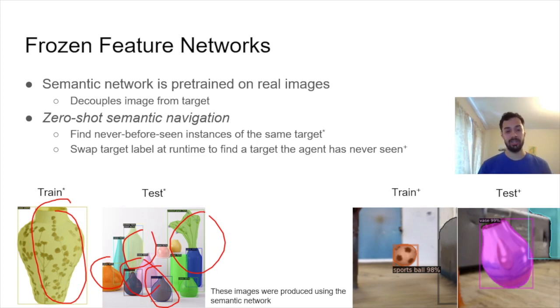But even more interestingly, we can actually swap the target label at runtime to find targets the agent has never seen before. So we can actually train on a football and then navigate to a completely different semantic class like a vase.